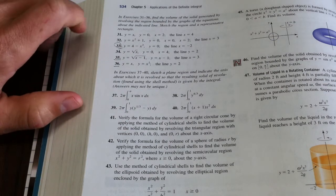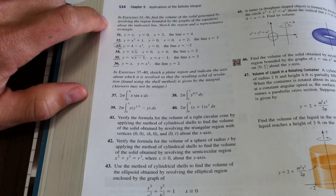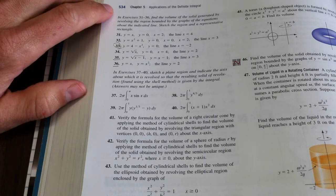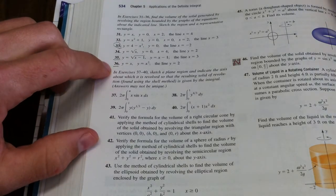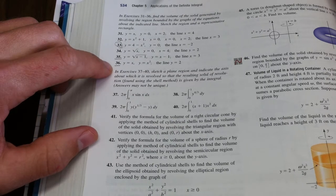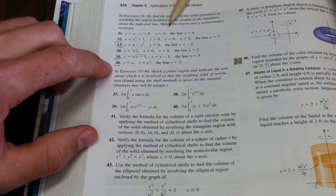Hello again. I'm on section 5.3, which is finding volume using the shell method. I'm on page 534, and I want to do problem 36 with you. So I'll read the instructions. Find the volume of the solid generated by revolving the region bounded by the graphs of the equations about the indicated line.